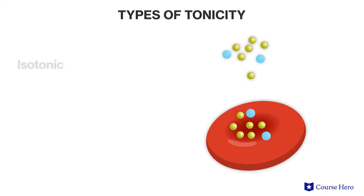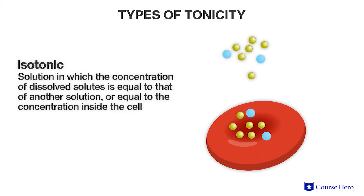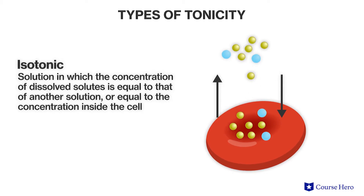There are three types of tonicity. In isotonic conditions, the extracellular fluid has the same osmolarity as the cell. Movement of water into the cell exactly balances the amount of water moving out of the cell. These are the ideal conditions for most animal cells.